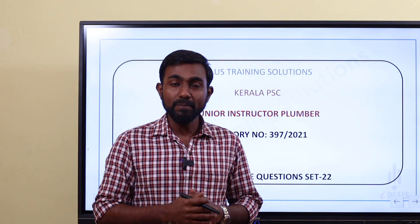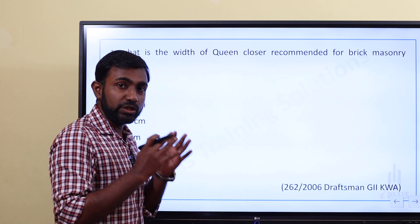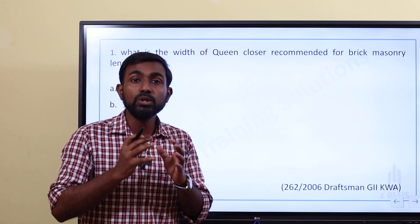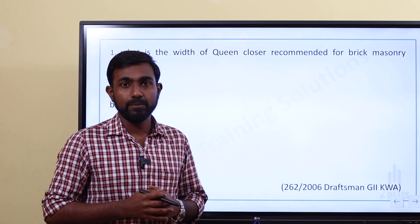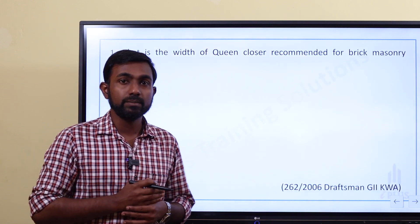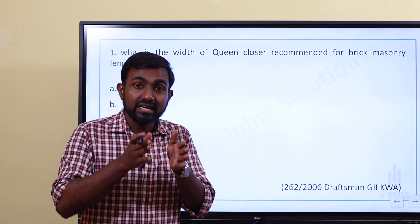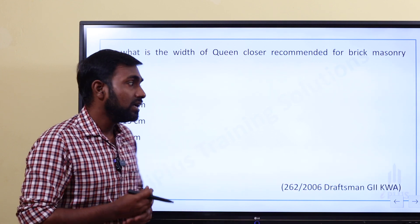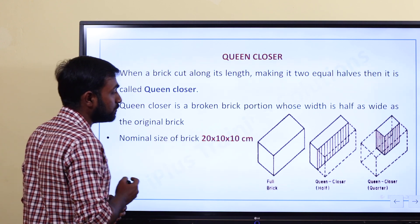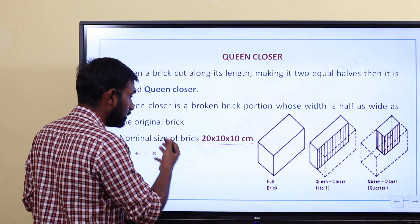What is the width of queen closure recommended for brick masonry? What is the queen closure? If we consider a brick, what is the nominal size of a brick? That is 20 x 10 x 10. That is the nominal size.